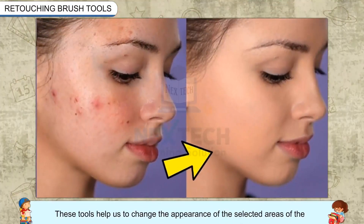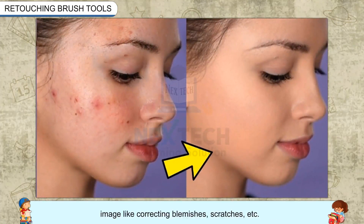Retouching Brush Tools. These tools help us to change the appearance of the selected areas of the image, like correcting blemishes, scratches, etc.